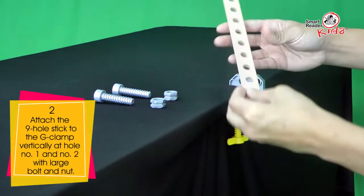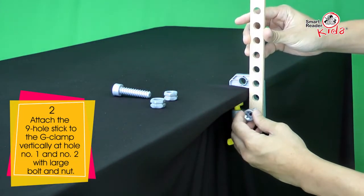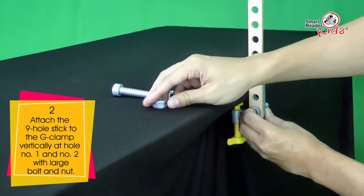Attach the 9-hole stick to the G-clamp vertically at hole number 1 and number 2 with large bolt and nut.